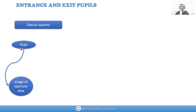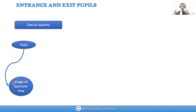The pupil is the image of the aperture stop, as in all other optical systems. The entrance pupil is the image of the stop of our optical system in the object side. The exit pupil is the image of the stop at the image side of our optical system.